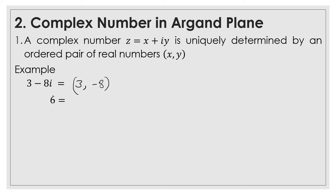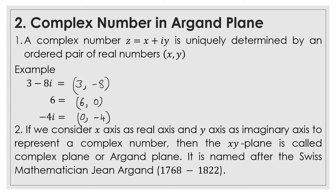The next one: 6 — that means the real part is there, there is no imaginary part, meaning the imaginary part is 0. In the third example, minus 4i: there is no real part, that means 0, and the imaginary part is minus 4. And if we consider the x-axis as the real axis and the y-axis as the imaginary axis to represent a complex number, then the xy-plane is called the argand plane or complex plane. It is named after the Swiss mathematician Jean Argand.